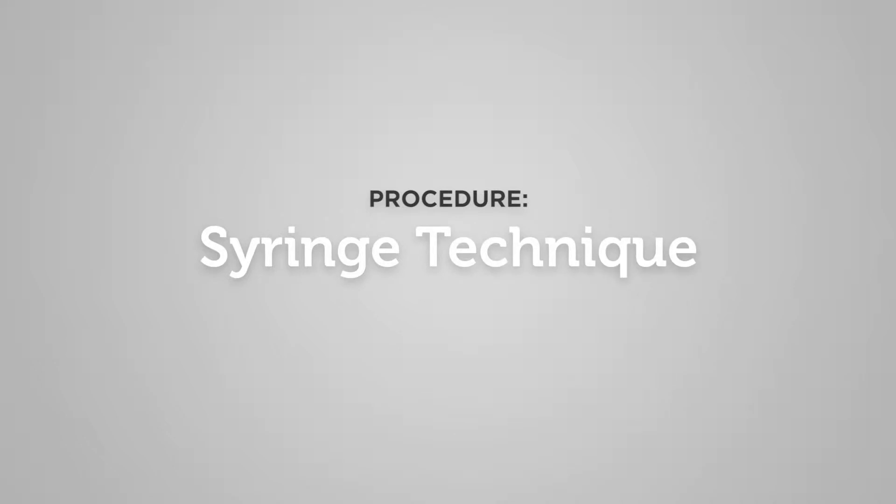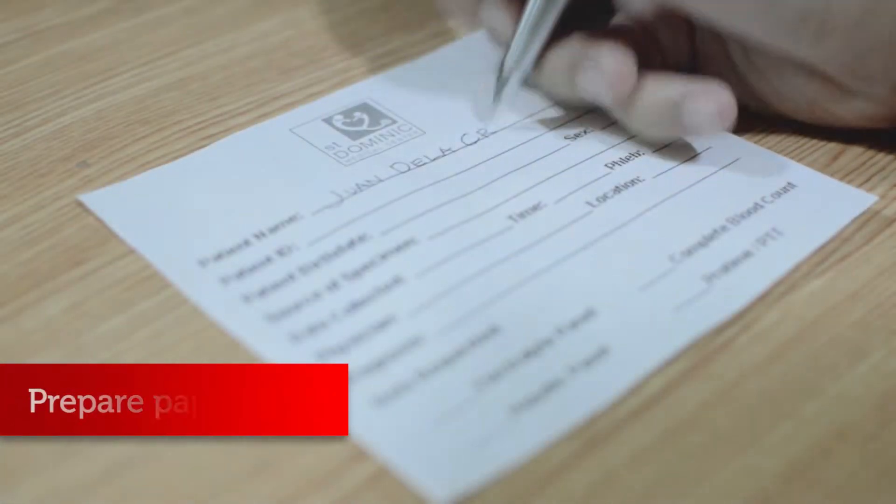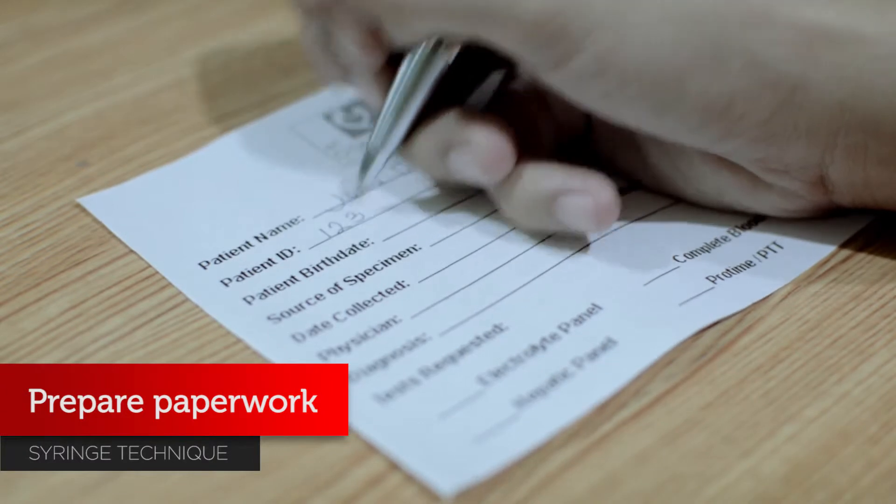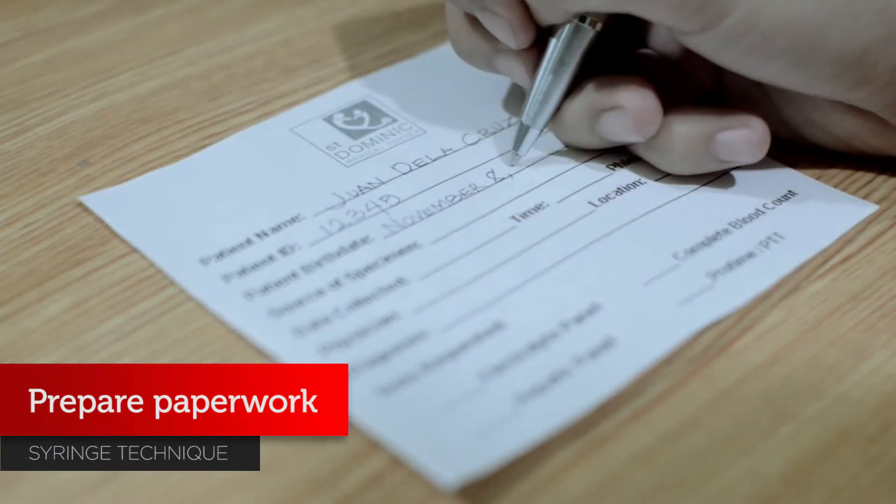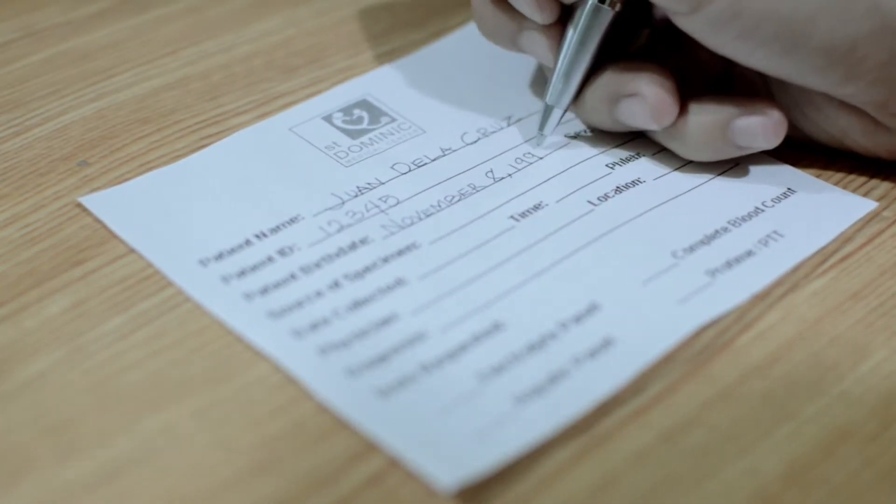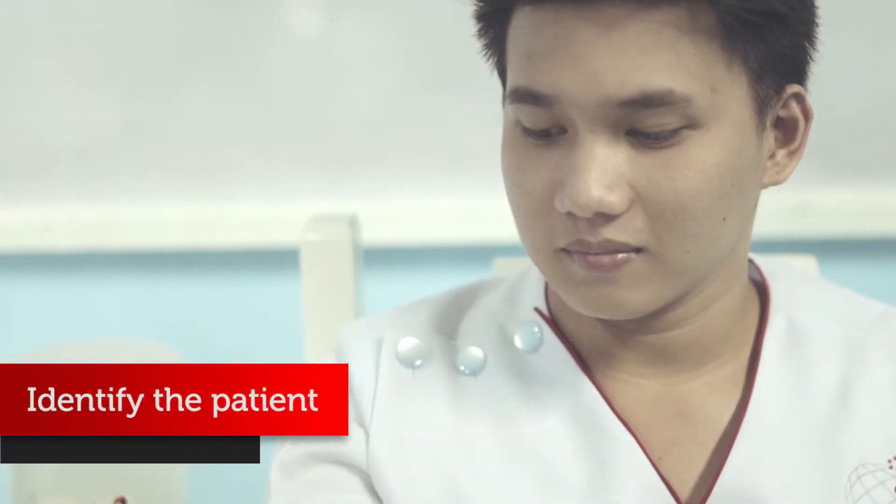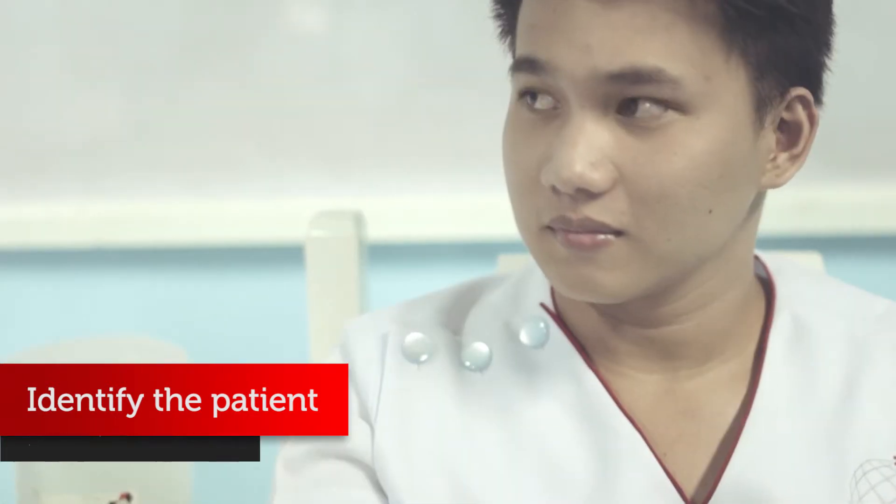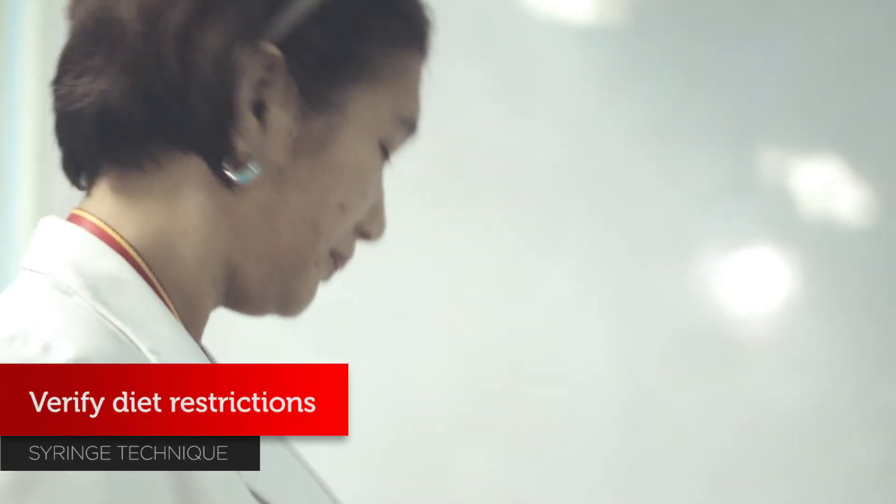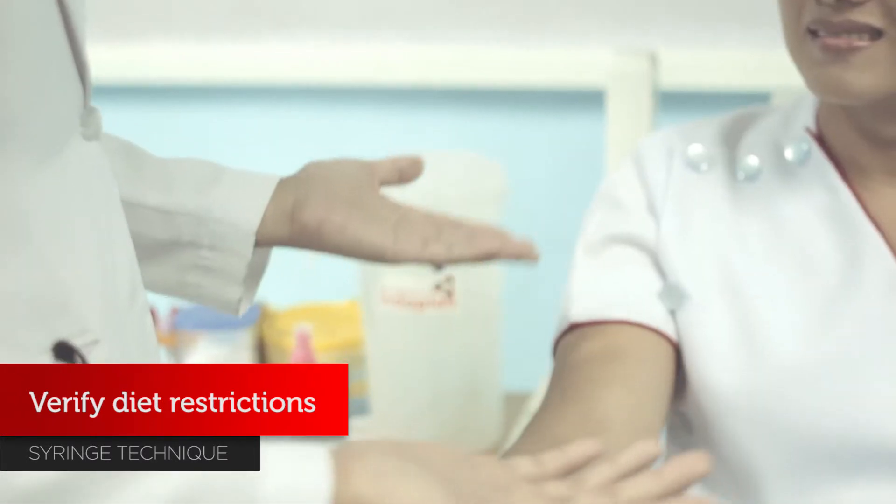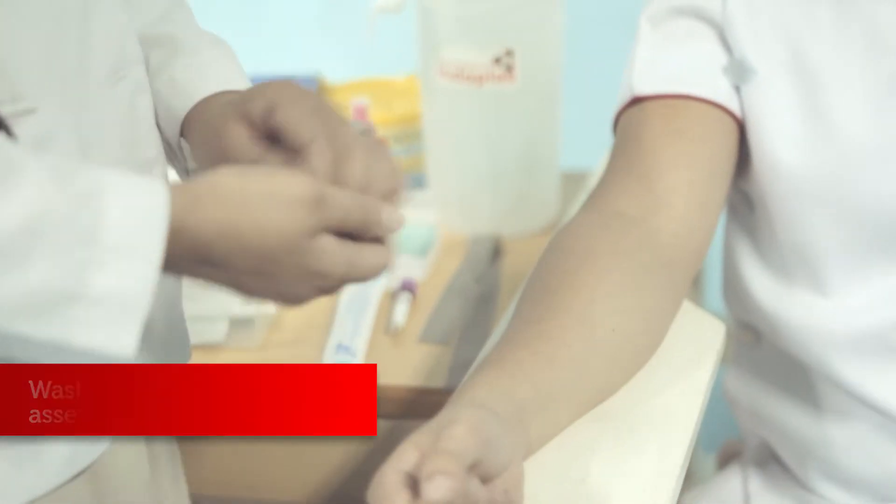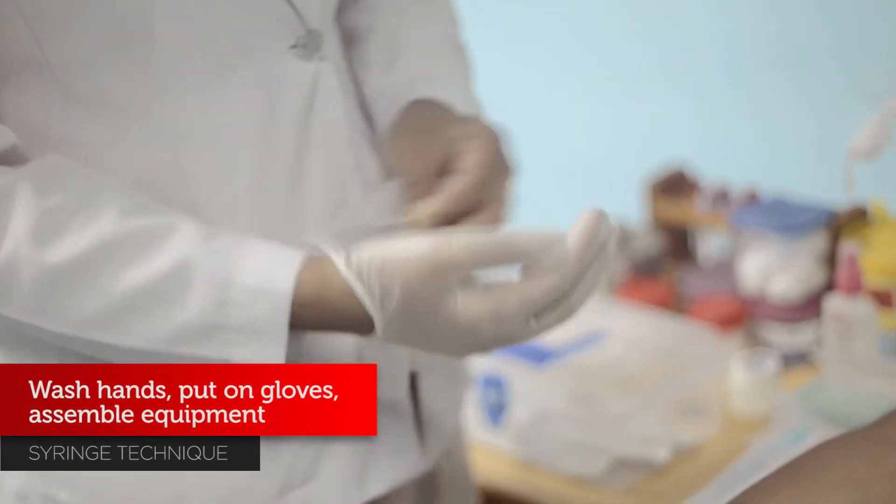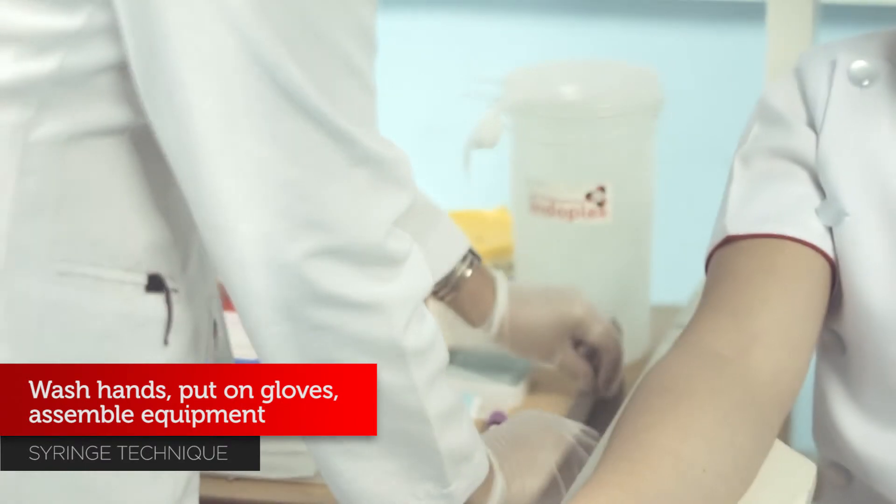Procedures in doing the syringe technique: prepare paperwork, identify the patient, verify diet restrictions, wash hands, put on gloves, and assemble equipment.